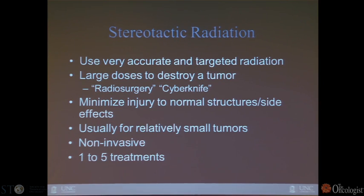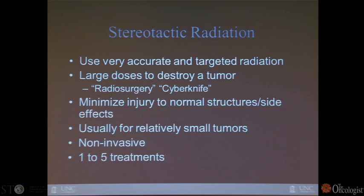At UNC, we use a machine called the CyberKnife. The purpose is to use a very small field, treat the tumor very precisely without surrounding structures, and minimize normal tissue dose and therefore injury. Because of how we use this, it's usually for relatively small tumors, and oligometastatic disease fits that mold fairly well. The procedure itself is non-invasive, although sometimes we have interventional radiologists put markers in to help localize tumors, and it's typically over one to five treatments.